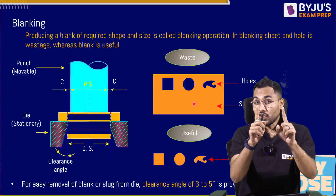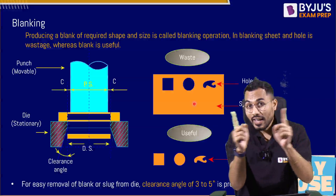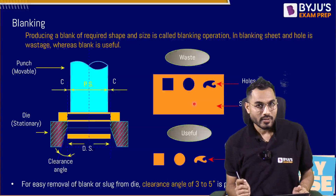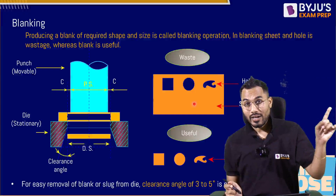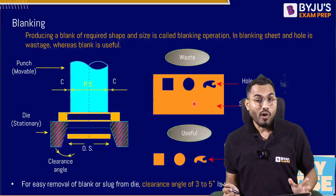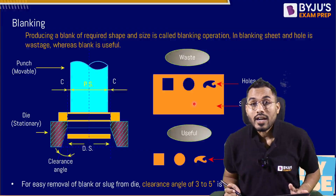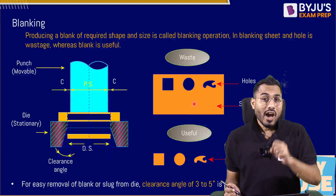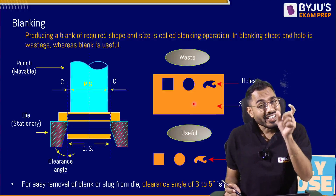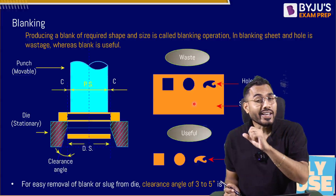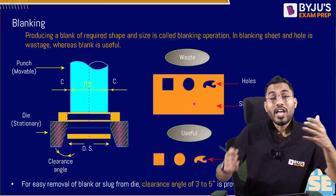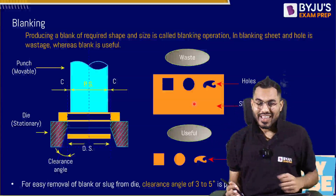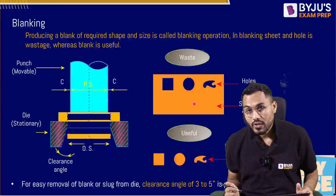Punch size and die size are always differentiated from each other by the clearance distance, calculated by the formula we just understood. Now the million dollar question is: how do we decide the punch and die dimensions for punching as well as blanking operations?